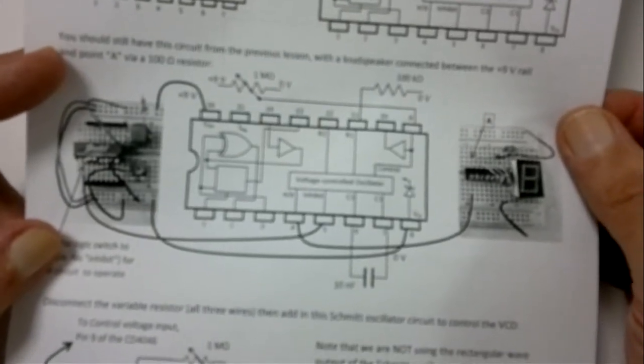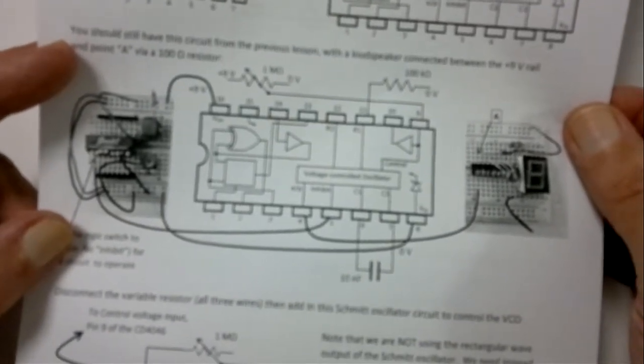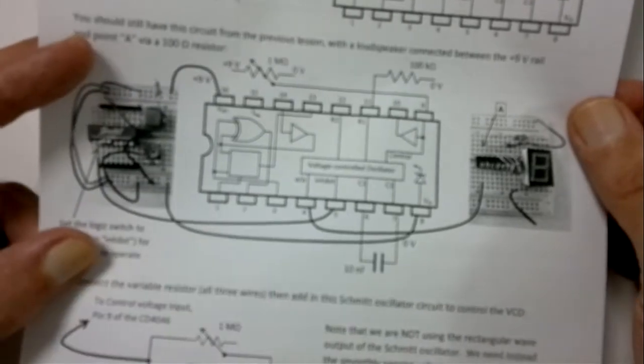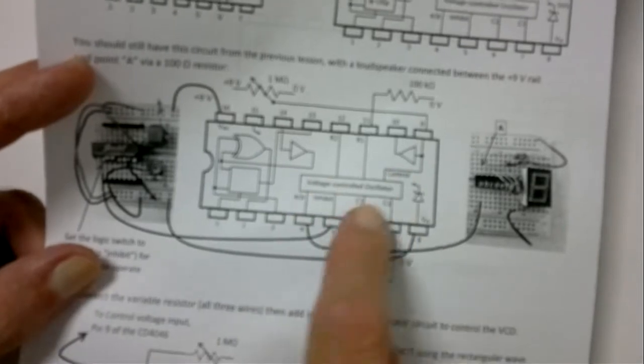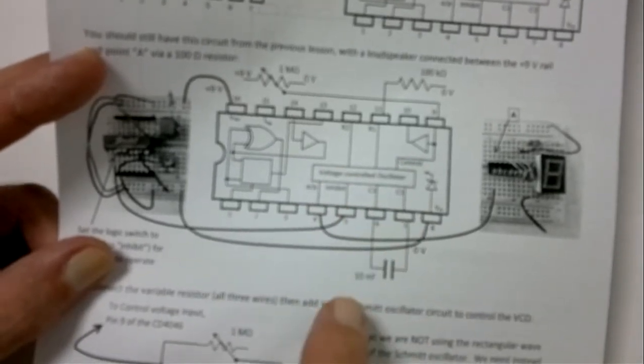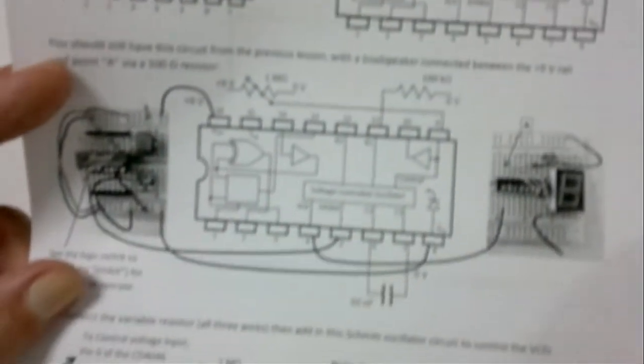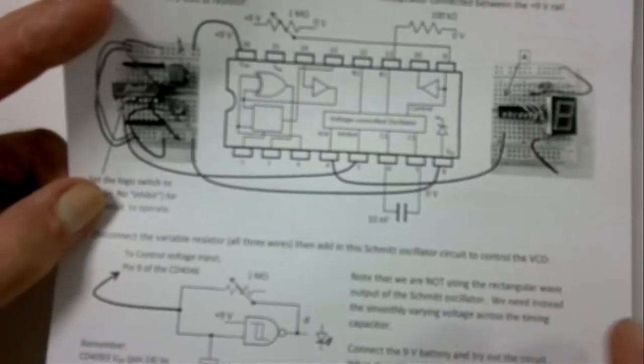OK, let's get on to the second experiment then in this second year DaVinci experience. Last week we had a bit of fun using the voltage controlled oscillator that's inside the CD4046 CMOS circuit. So we're just going to do a little bit more of that now.